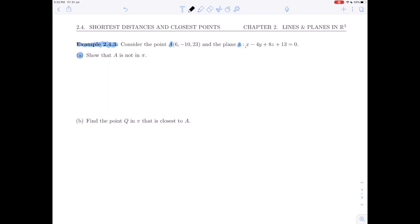We remember that if A were to be in π, it would need to satisfy the plane equation. So we're going to check A in the plane equation and show that it does not give 0. If we plug in the x, y, and z of point A here, we are going to have 6 - 4(-10) + 8(23) + 13, which is going to give us 6 + 40 + 184 + 13 = 243, which is non-zero. Since A does not satisfy the equation of the plane, we can say definitively that A is not in π.